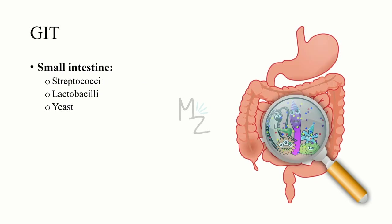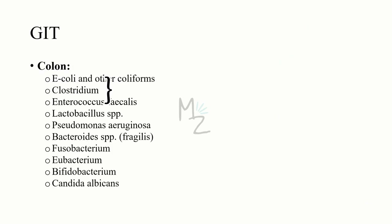In the GI tract, first the small intestine and then the colon (large intestine). Normal flora of the small intestine includes streptococci, lactobacilli, and yeast — the first two are bacteria, the last is a fungus. Normal flora of the colon includes E. coli and other coliforms, Clostridium, Enterococcus faecalis, Lactobacillus species, Pseudomonas aeruginosa, Bacteroides species (particularly Bacteroides fragilis), Fusobacterium, Eubacterium, Bifidobacterium, and a fungus — Candida albicans.